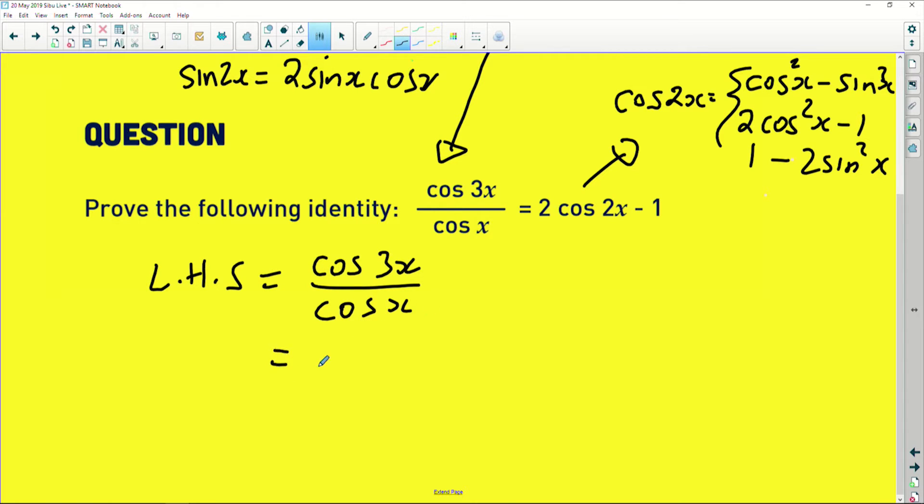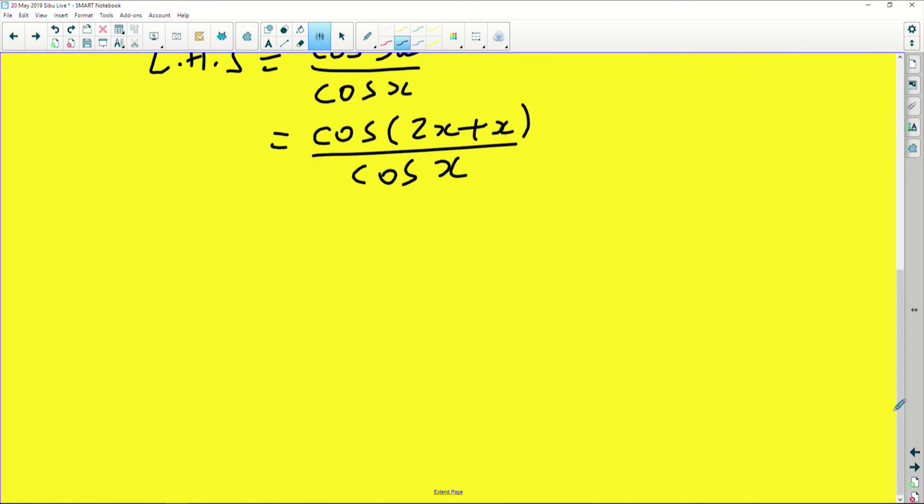The left hand side equals to the cos sign of 3x divided by the cos of x. So that 3x is the sum of two angles which I'm going to call 2x plus x, divided by the cos of x.